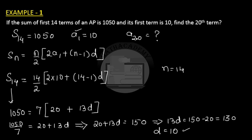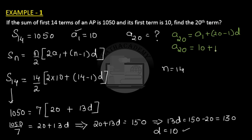Now we know a1 = 10 and D = 10, and we need a20. Using the explicit formula a(n) = a1 + (n−1)×D, we get a20 = 10 + (20−1)×10 = 10 + 190 = 200. So the 20th term is 200.